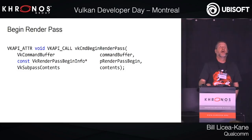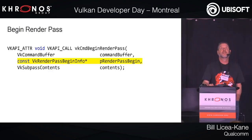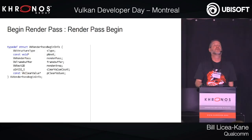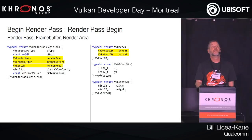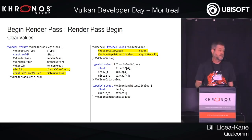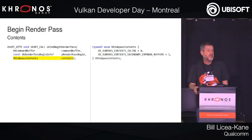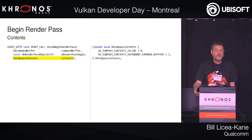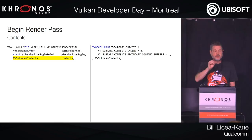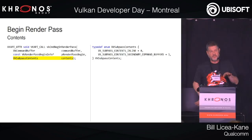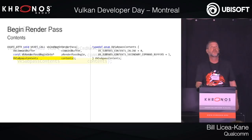During command buffer building you call begin render pass, passing in a render pass begin info that includes the render pass object, the frame buffer object, a render area (the subset of the frame buffer you'll render to), and the clear values. For sub-pass contents, you have two options: inlining commands in the main command buffer from begin render pass through to the next sub-pass, or executing a secondary command buffer. You get to choose per sub-pass — the first could use execute commands, the second inline, the third execute commands, and so on.